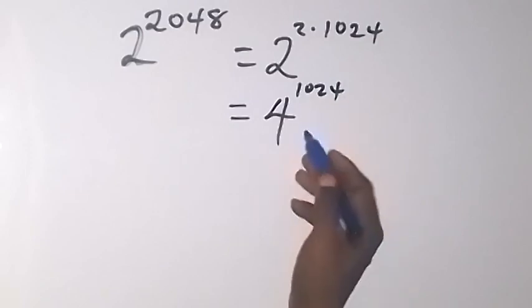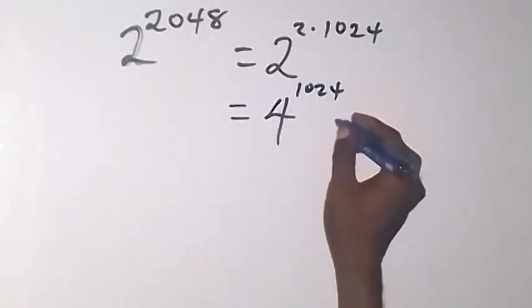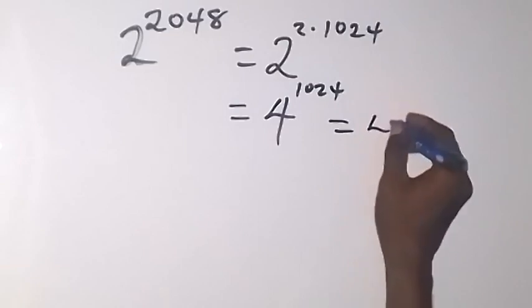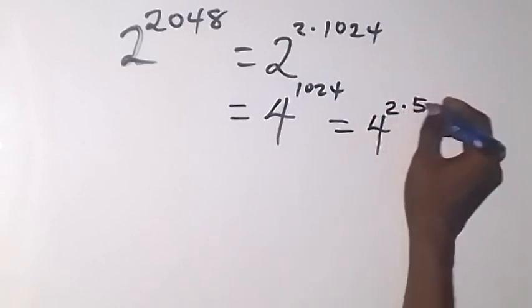And we can also factor 2 from here. And from here we can say this is 4 squared times 512.